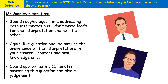To recap the top tips: spend roughly equal time addressing both interpretations — don't weight your answer heavily on one. You do need to give a judgment throughout as to which is more convincing. Like question one, don't refer to the provenance of either interpretation. Use only content and your own knowledge. Finally, aim to spend approximately 10 minutes on this question and give a judgment throughout your answer — but definitely at least at the very end.